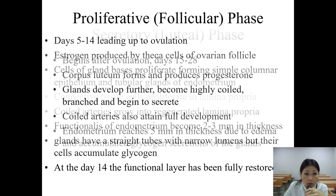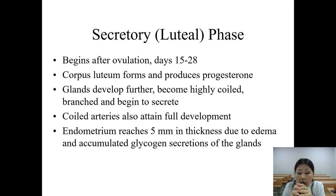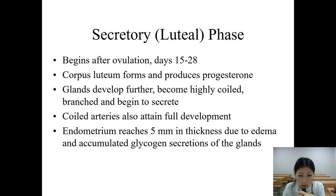The secretory or luteal phase begins after ovulation, days 15 to 28. The corpus luteum forms and produces progesterone. Glands develop further, become highly coiled and branched, and begin to secrete. Coiled arteries also attain full development. The endometrium reaches 5 millimeters in thickness due to edema and accumulated glycogen secretions of the glands.